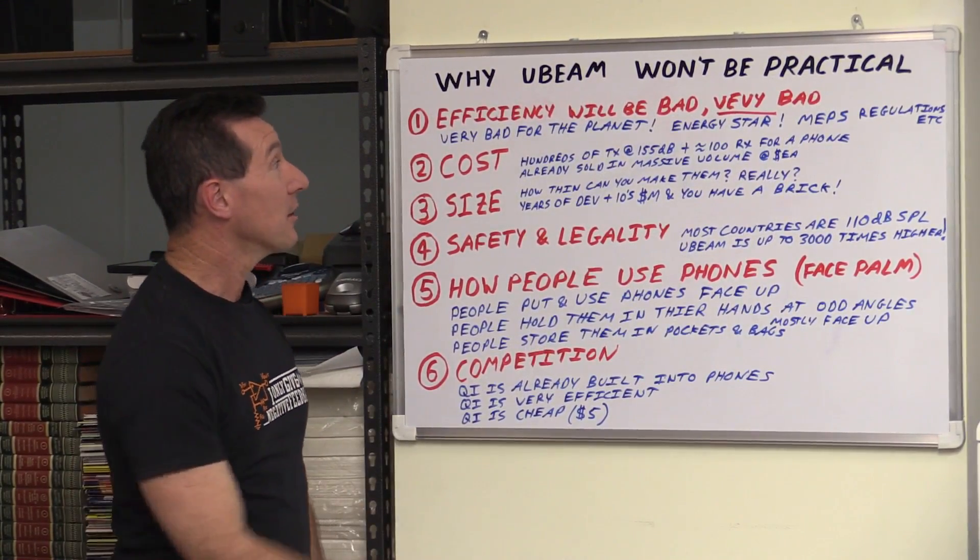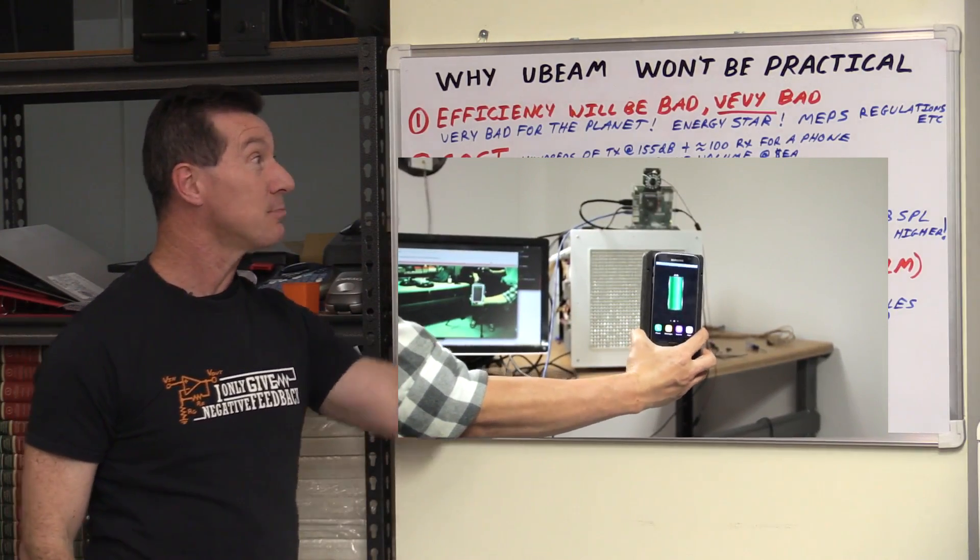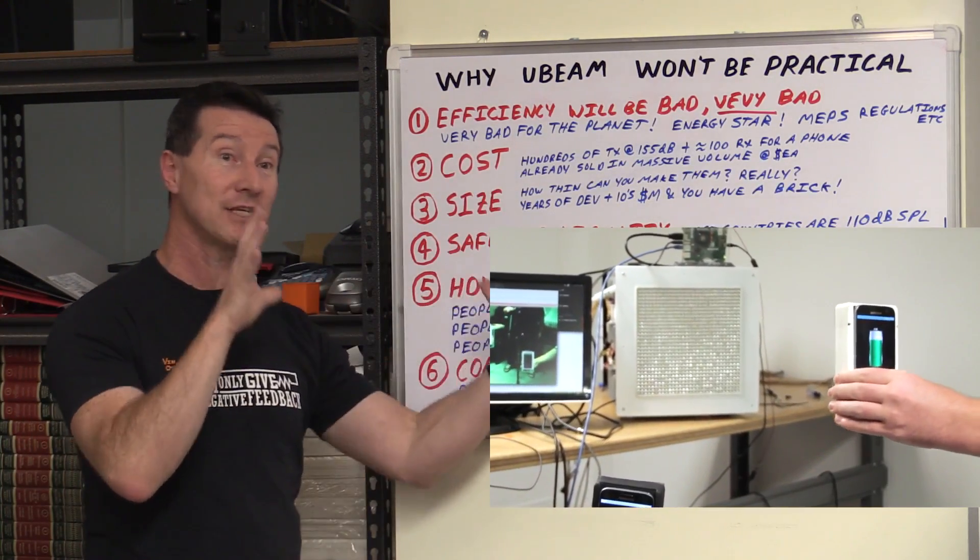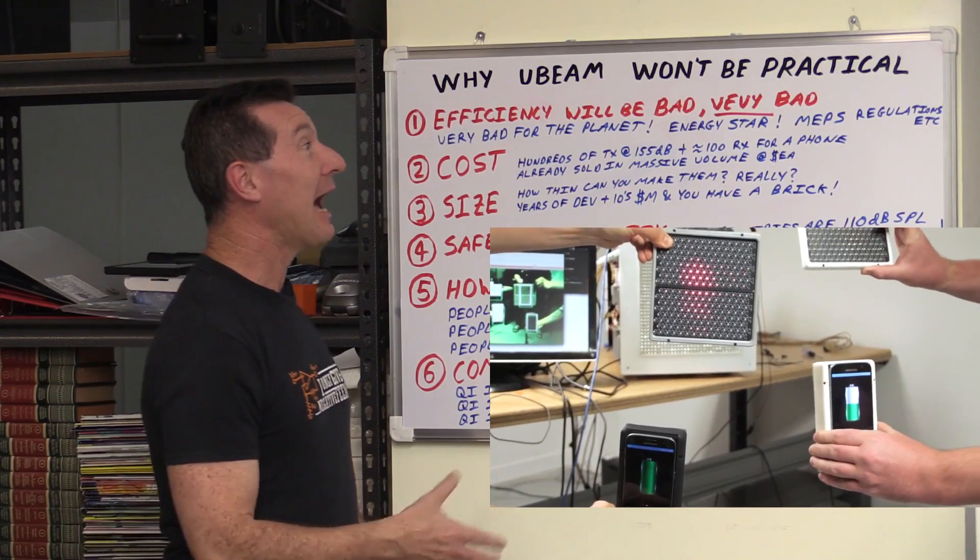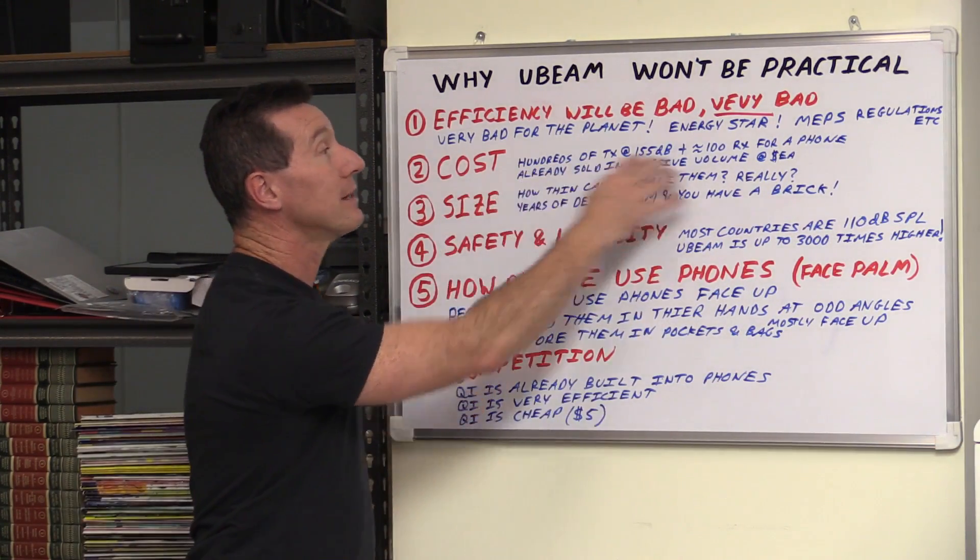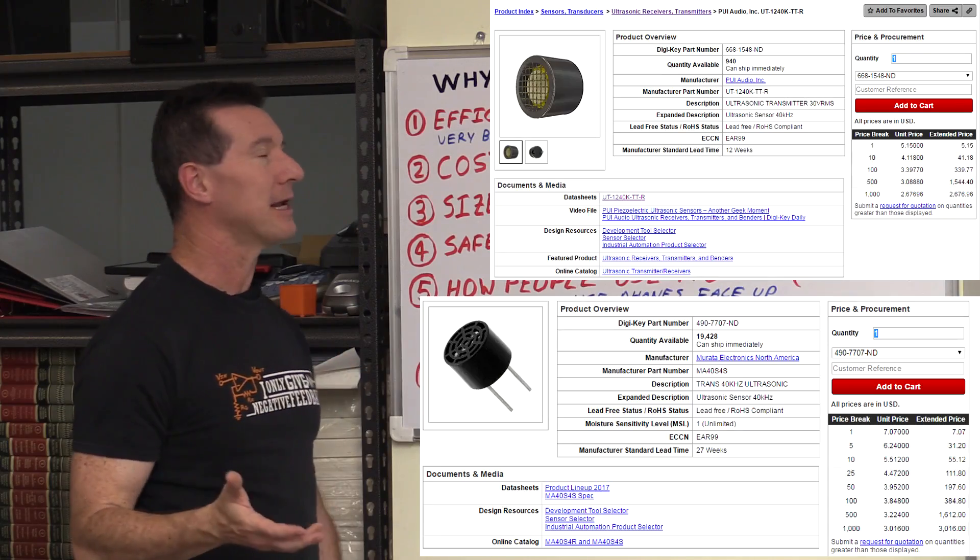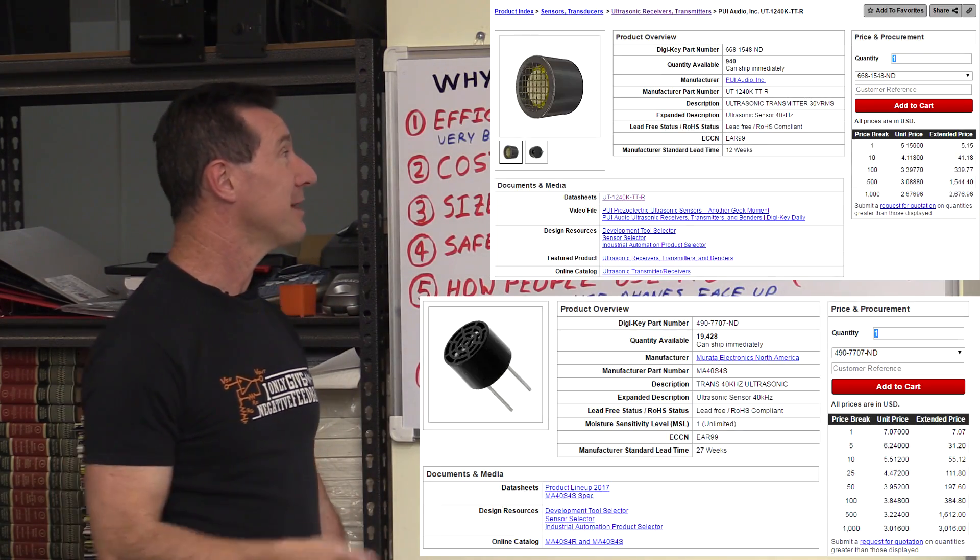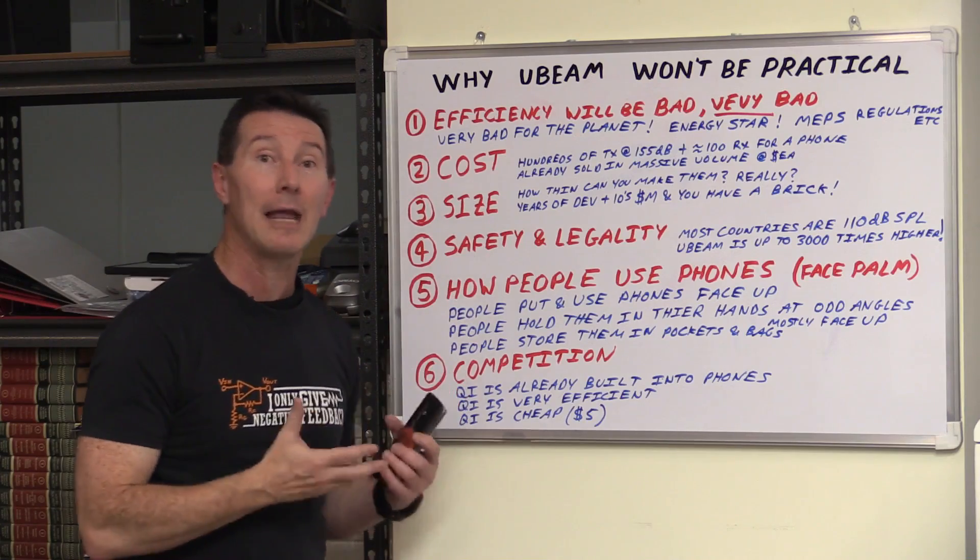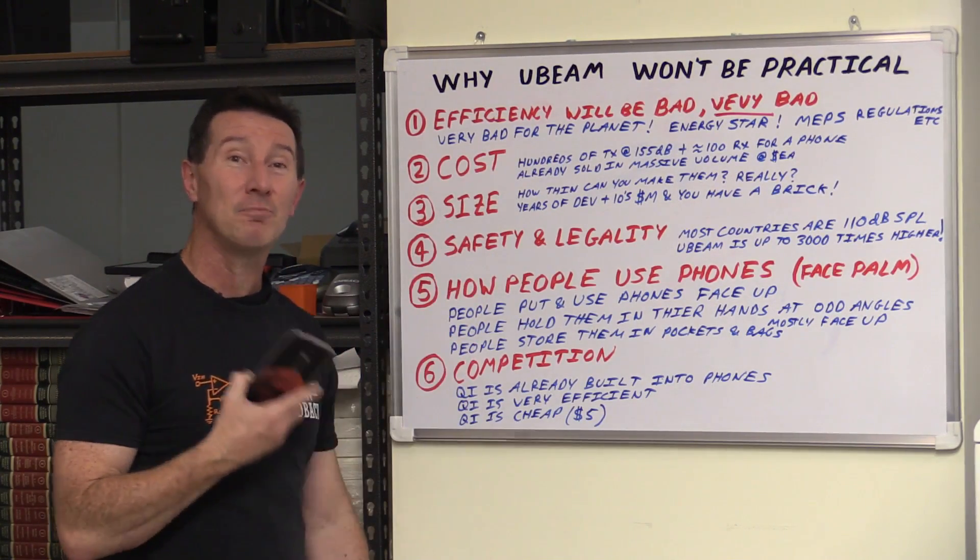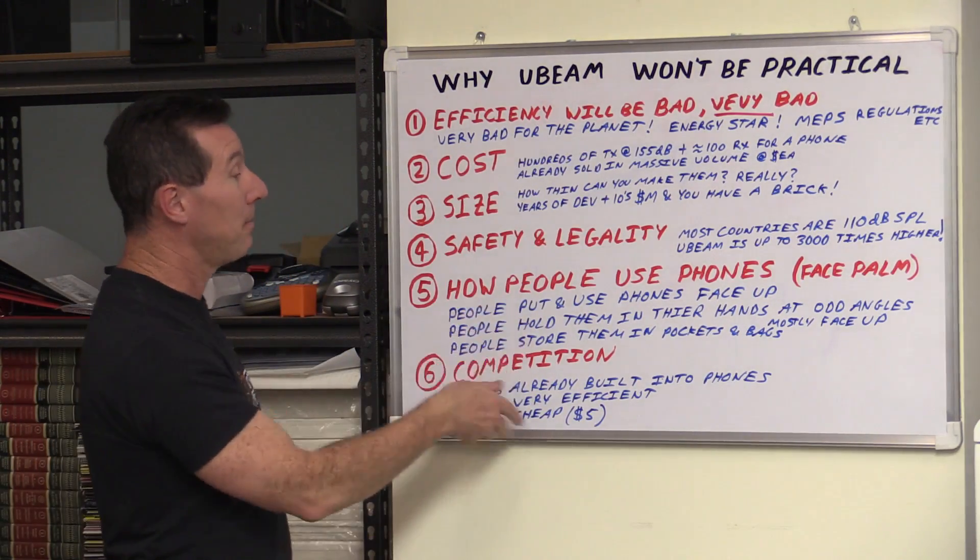Cost. You need hundreds of these transducers that can do 145 to 155 dB SPL. For the transmitter, hundreds and hundreds of them. You need maybe a hundred of them for a phone size thing on the back. These are already sold in massive volume for the automotive industry. They're several dollars each. There's no way Willy Wonka's transducer factory is going to churn out transducers of this capability for anywhere near a practical consumer cost. You need so many of them.